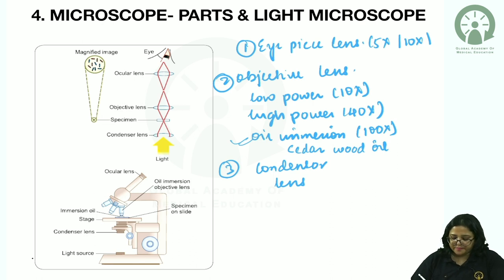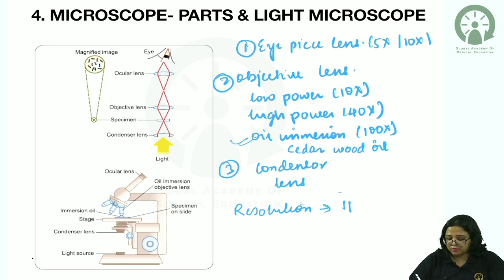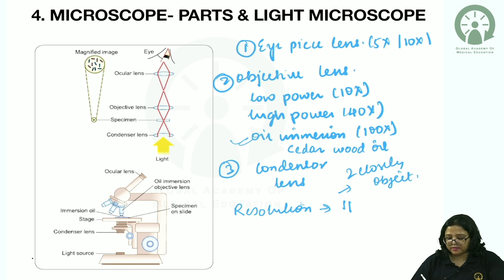Resolution is the ability to differentiate two closely placed objects as two separate objects. This is the key importance of the microscope. We need to know the resolving power of the unaided eye, the light microscope, and the electron microscope.